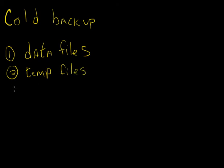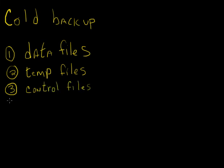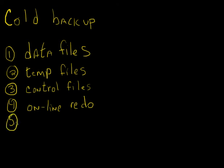We don't have to back up control files and online redo log files, but in general those files are usually small enough that it's a good idea to go ahead and back these up also. So we can back up our control files and online redo logs. There's also a fifth kind of file called an archive file.